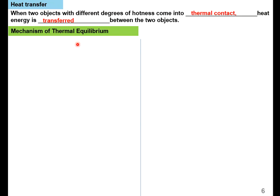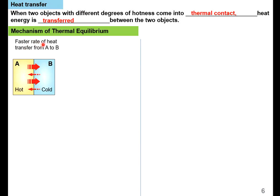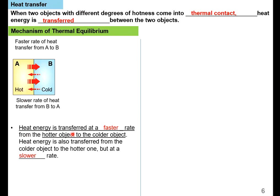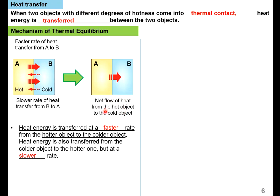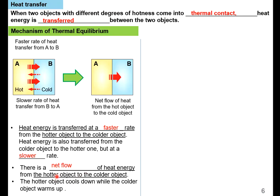The mechanism of thermal equilibrium: if object A is hotter and object B is colder, and they are in thermal contact, there is a faster rate of heat transfer from A to B. B will also transfer heat to A, but at a slower rate. Heat energy is transferred at a faster rate from the hotter object to the colder object, and also from the colder object to the hotter object but at a slower rate. Because A transfers more heat than B, the net flow of heat is from the hot object to the cold object. The hotter object cools down while the colder object warms up.